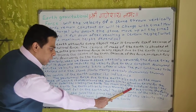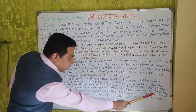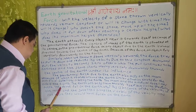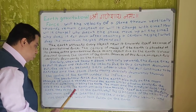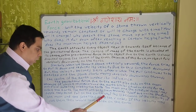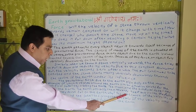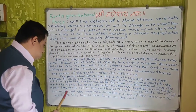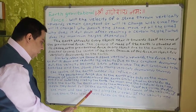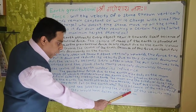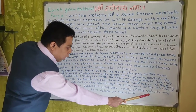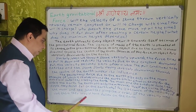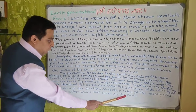The Earth attracts them towards itself, but unlike the falling apple, they do not fall on the Earth. Why? This is because of the velocity of the Moon and the satellites along their orbits. If this velocity was not there, they would have fallen on the Earth.